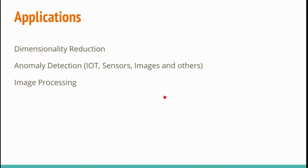Autoencoders have many use cases: dimensionality reduction, anomaly detection for IoT sensors and fraud detection in banking, image compression, and denoising images. In the next set of videos, I'll show how to develop an autoencoder with a regular dataset and a time series dataset. Thank you very much.